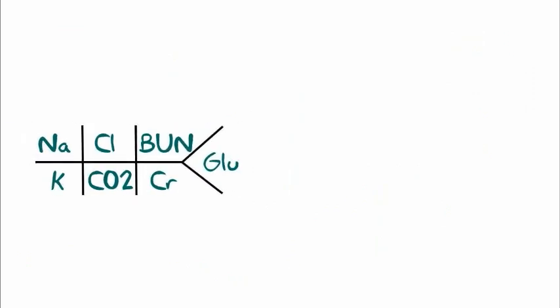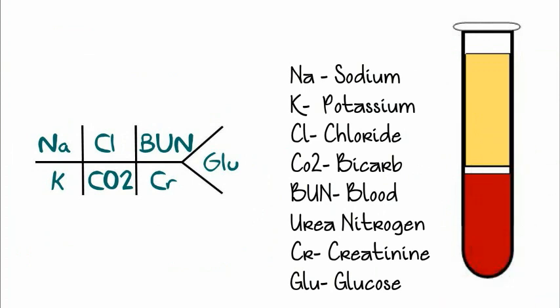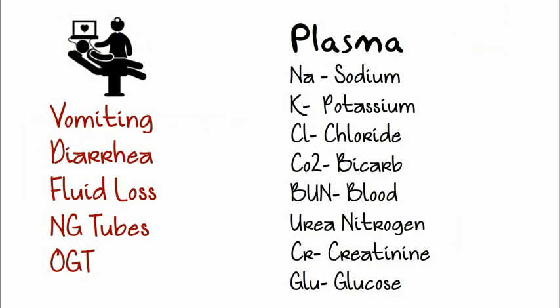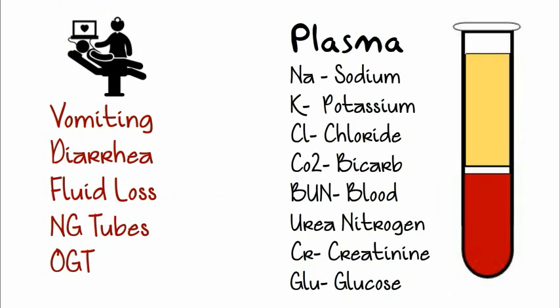So we're going to go over the BMP, and what we're really measuring is these electrolytes. And these electrolytes are all in the plasma. And this is an interesting concept when you're trying to assess our patient's labs, since anything that's going to affect our fluids will affect the plasma, like vomiting, diarrhea, fluid loss, and even procedures that take fluid out, like an NG tube or an OG tube.